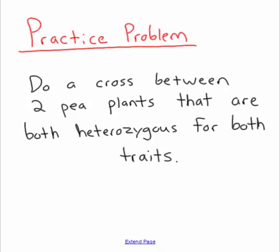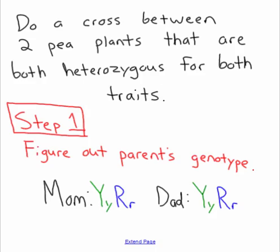Here is what a potential problem could look like. It would say: do a dihybrid cross between two pea plants that are both heterozygous for both traits. We're going to attack this dihybrid problem in steps. Step one is identifying the parents' genotype, and the problem states that both parents are heterozygous for both traits — color and seed shape.